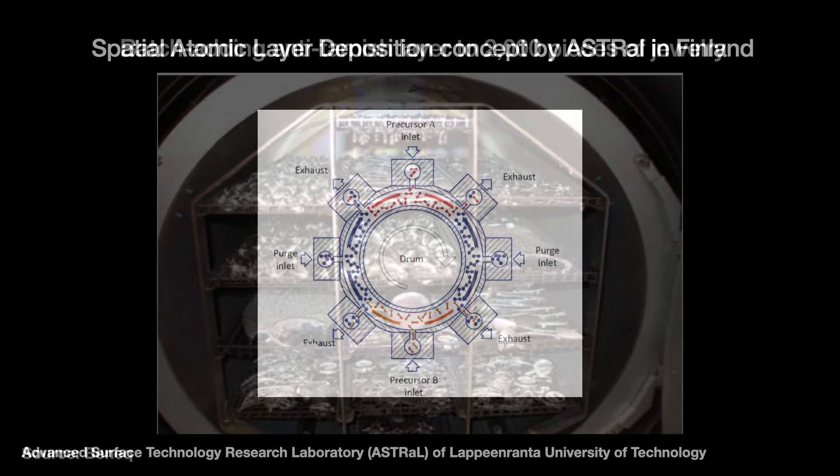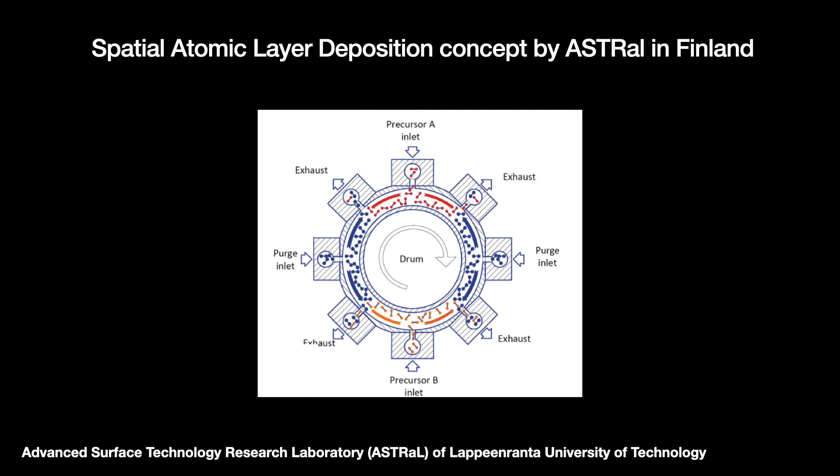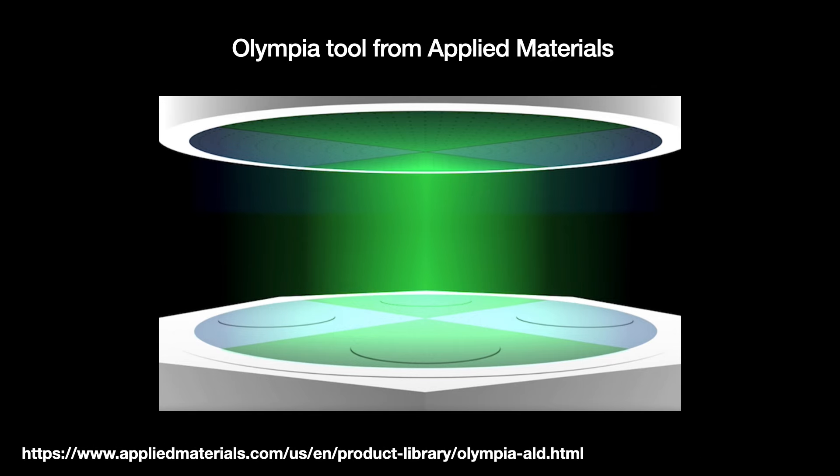And third, we have new spatial ALD tools. The concept has been around a while — this is where you separate the pulse and purge steps by space rather than time. One way to implement this is to have multiple chambers, each handling one of the pulse and purge steps with the wafers moving through them. The Olympia tool from Applied Materials uses this concept with wafers on a drum rotating through various chambers.